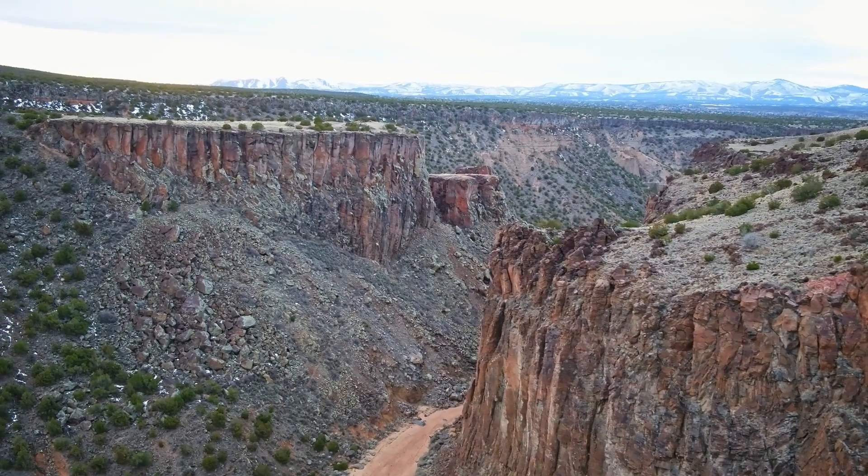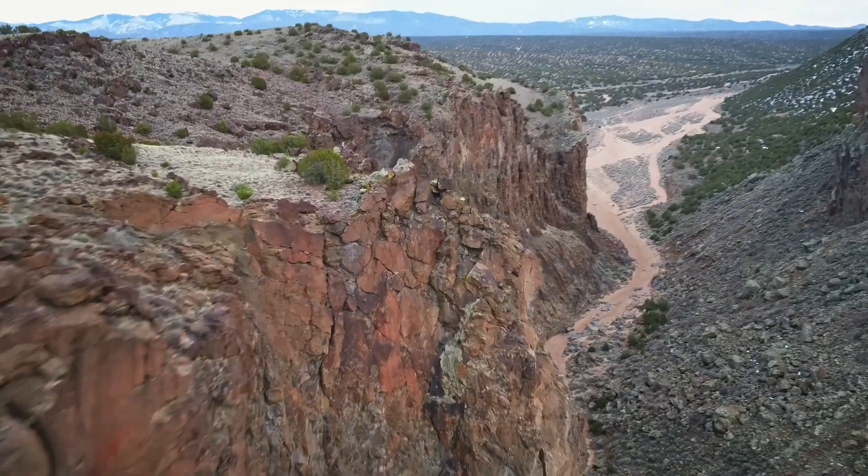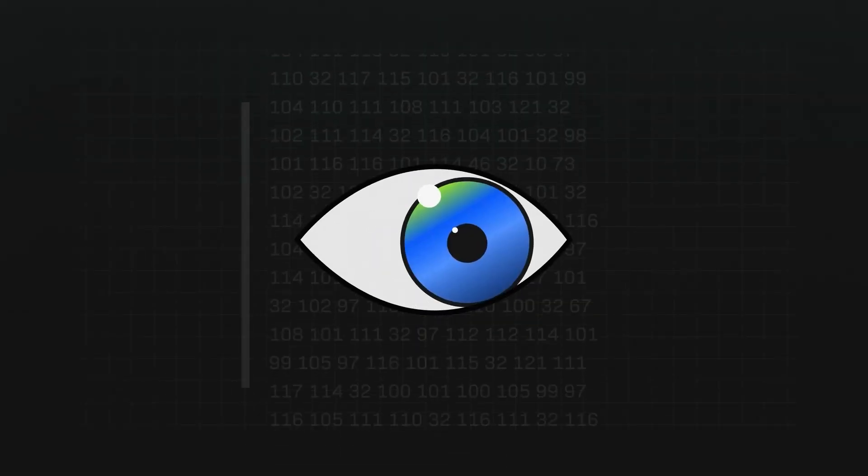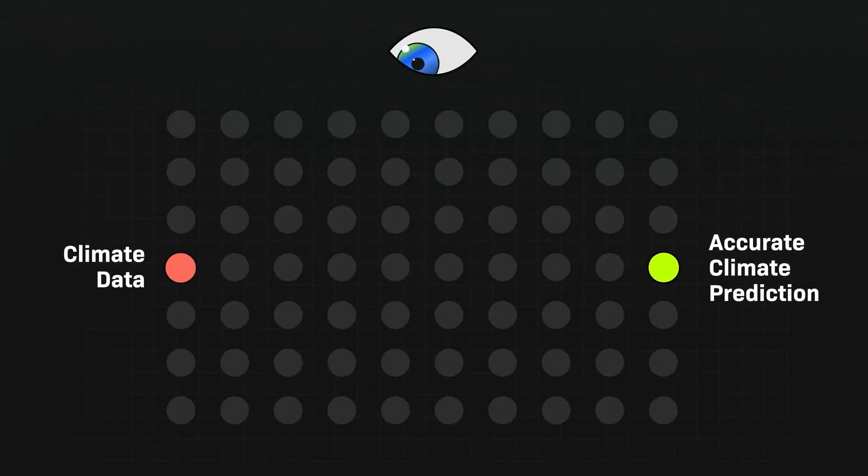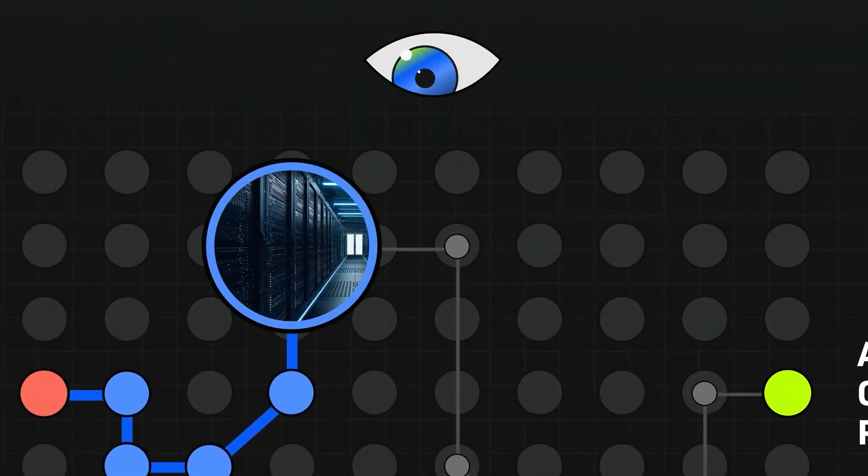First off, the experts are worried that as AI gets more and more advanced, the wrong kinds of people could use it as a weapon. Instead of AI helping scientists discover new medicine, someone could hijack it to create chemical weapons to hurt people.